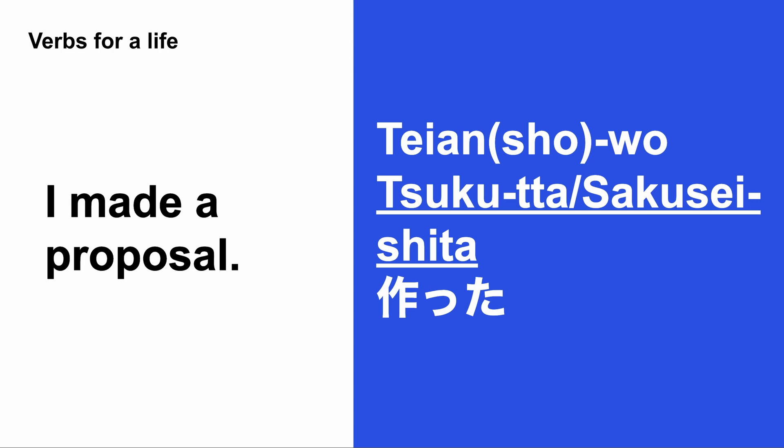Next: 提案を作った — I made a proposal. 提案 means proposal. If it's a document, you can say 提案書 (proposal document). You can also say 提案を作成した, where 作成した means to think about and create your own plan formally.